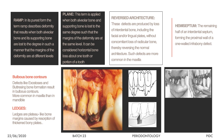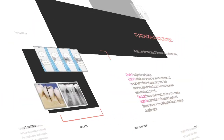Bulbous bony contours result from defects like exostosis and buttressing bone formation and are more commonly seen in the maxilla than the mandible. Ledges are a type of intrabony defect on the facial or lingual bone — specifically, the outer cortical plate of the facial bone is intact while the tooth-surface cortical plate is lost, resulting in a thin line of bone on the buccal or lingual side with bone loss between the tooth and the facial bone.